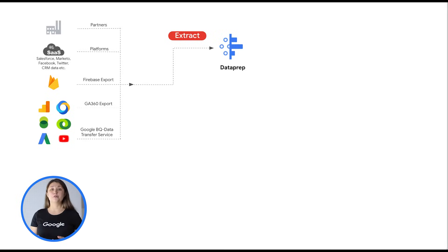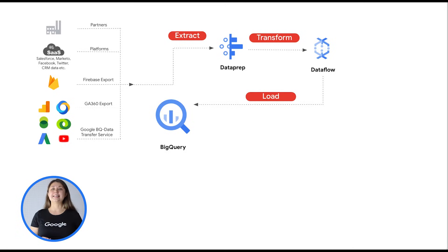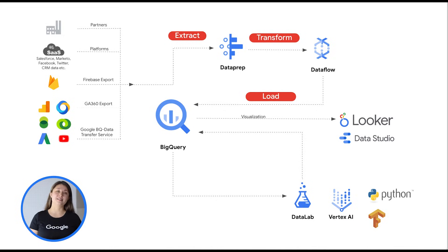Extract refers to pulling data out of a source, transform is about modifying the data so that it can be loaded into the destination, and load is about inserting the data into the destination. This is a common way for organizations to combine data from multiple systems into a single data warehouse. ETL can be used to store legacy data or, as more typically today, aggregate and process data to analyze and drive business decisions. BigQuery is a great choice for your ETL data pipeline.